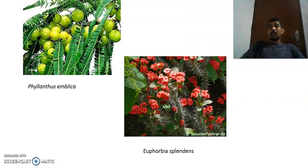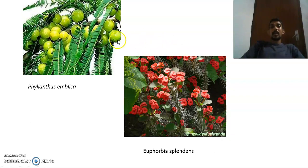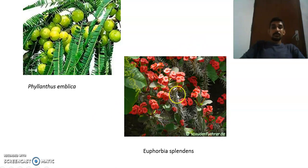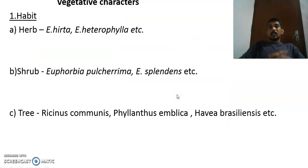In Malayalam, Acalypha hispida is called 'poochavali' because its inflorescence is a catkin. Another example is Phyllanthus emblica (gooseberry). And Euphorbia splendens is a commonly used ornamental plant — you can see this Euphorbia species on our college campus as well.